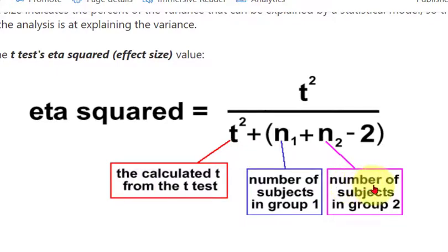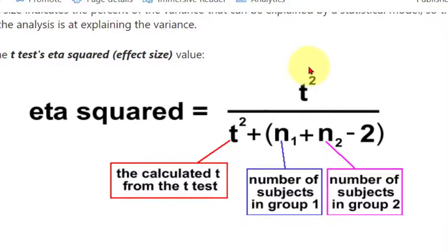So all we've got to do is take the t-test statistic — which is negative 0.987 — and square it. That's the numerator. The denominator is going to be whatever that number was, plus the degrees of freedom. Degrees of freedom is the total sample size minus the number of groups.